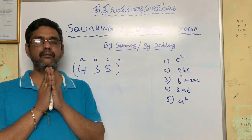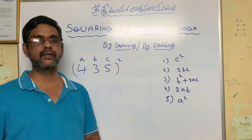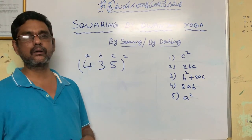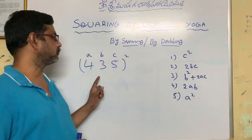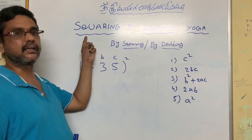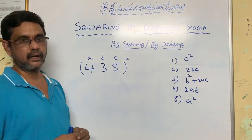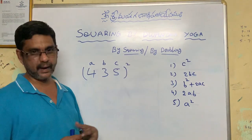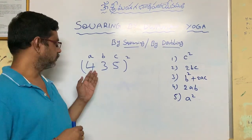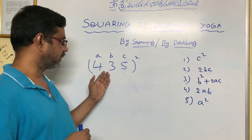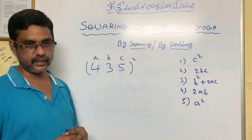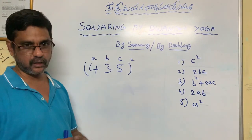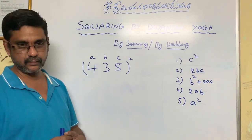Om Shri Mahagana Dupataya Namaha. Hi friends and my dear students. Now I am going to explain how to find out the square of a 3-digit number by using Vedic Sutra Dvandva Yoga. I have already told you the meaning of this sutra is 'by squaring by doubling'. So let us consider a 3-digit number 435. I am going to find out its square using Dvandva Yoga. These are the 5 steps involved in this method.